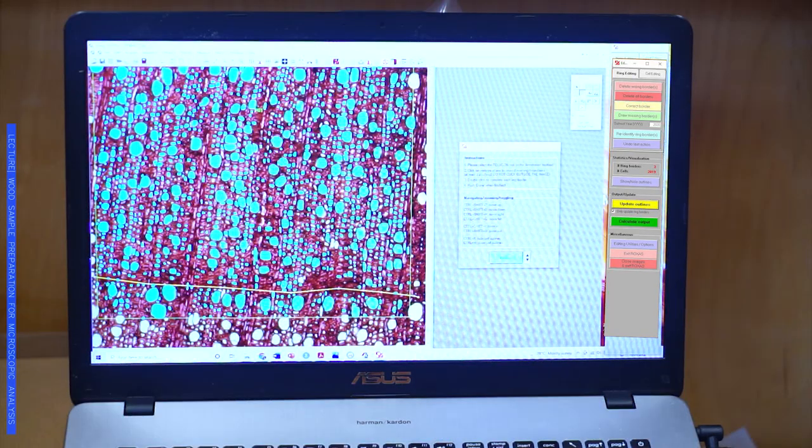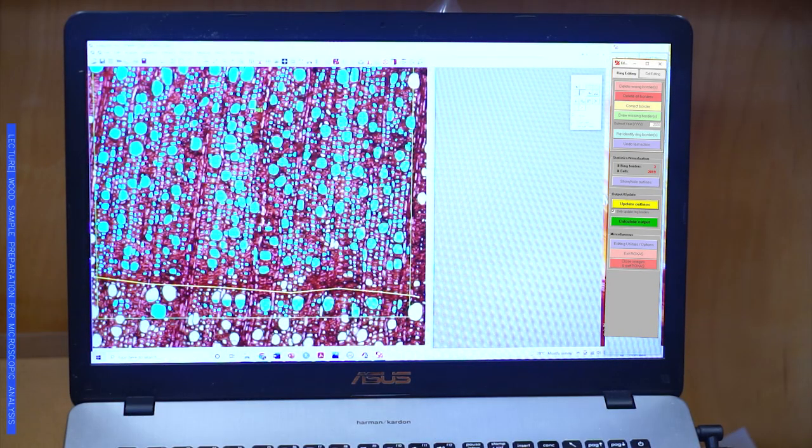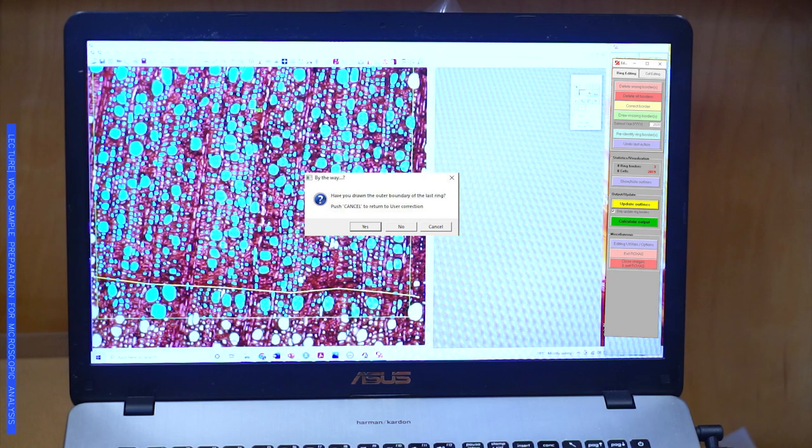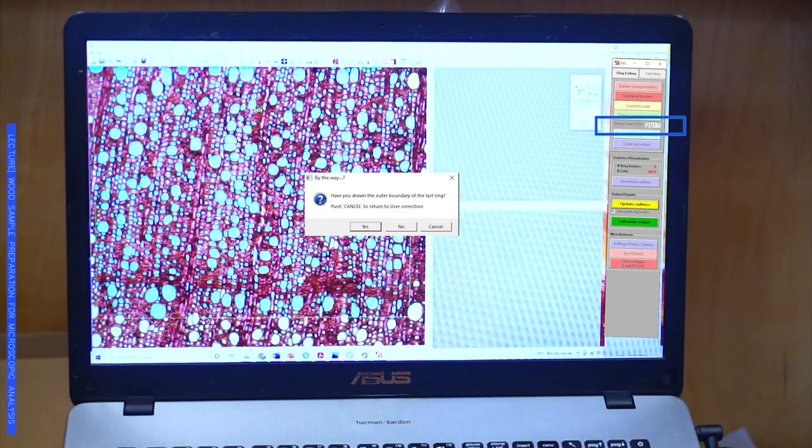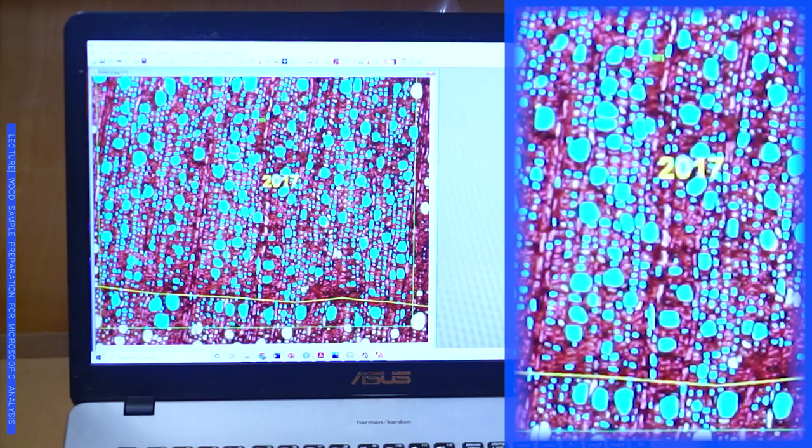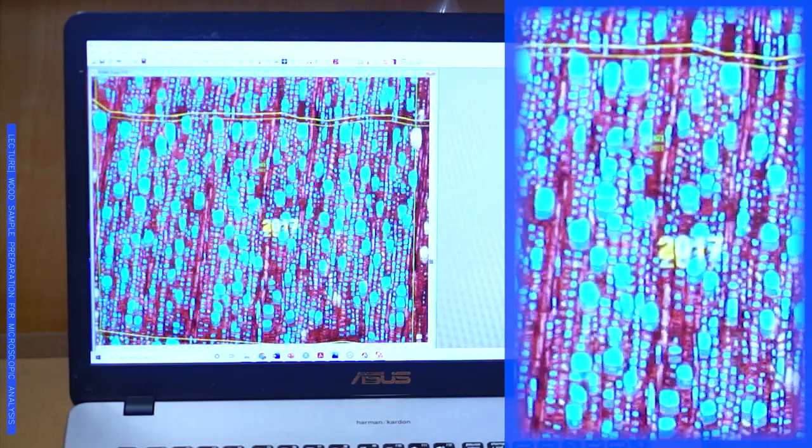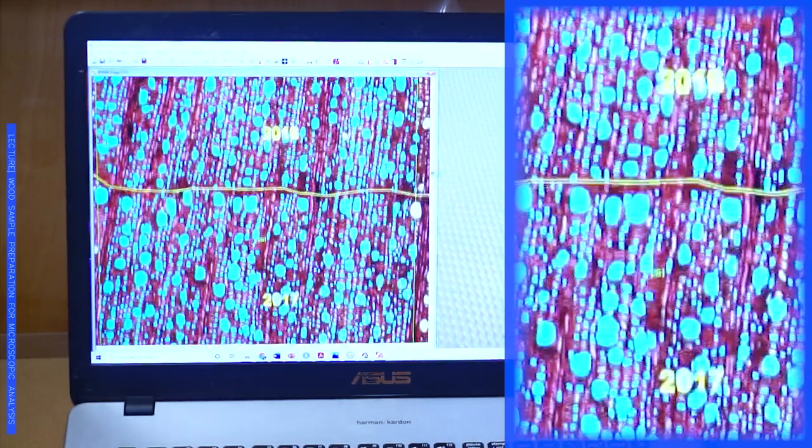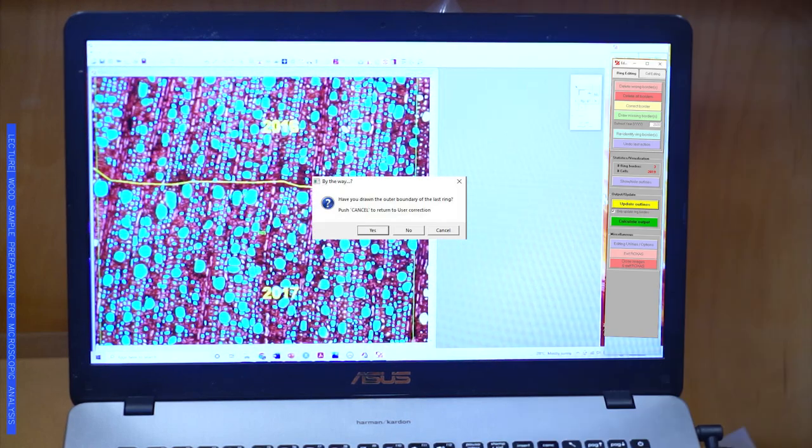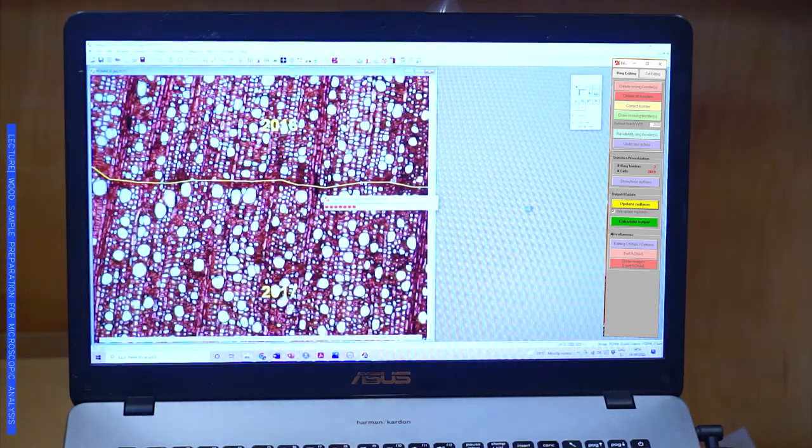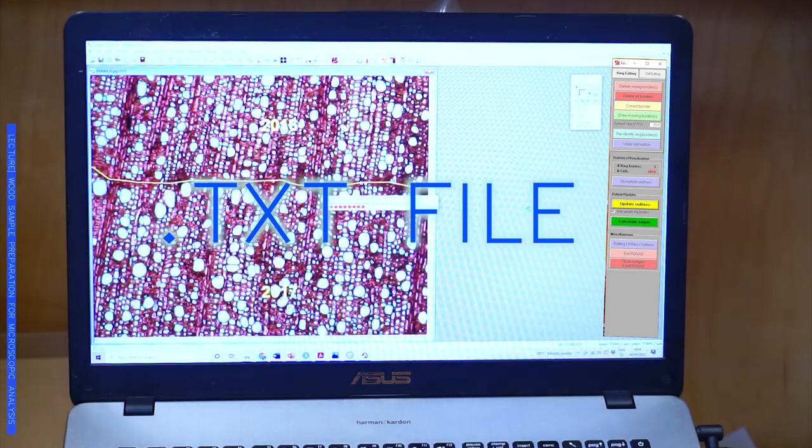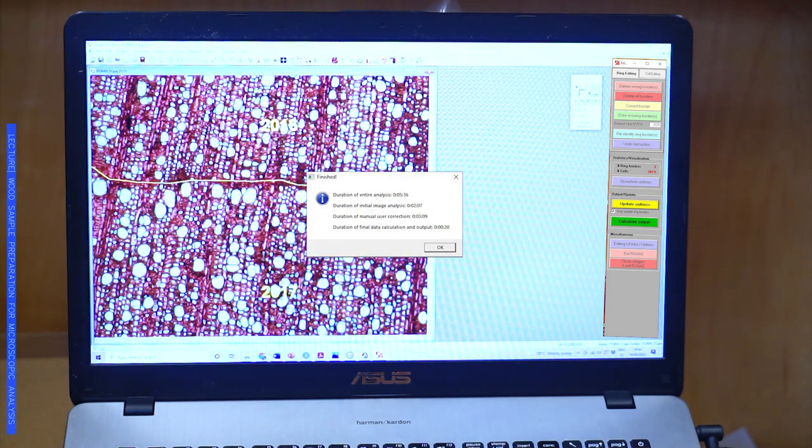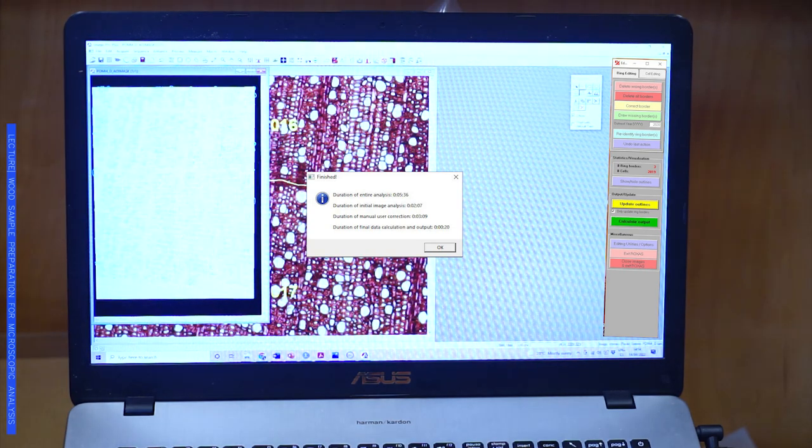In this case, we collected them in 2017, so I can just put here 2017 so that it will already give me the years. I have to update it. Here you can see already the program has assigned the year of study 2017, 16, and just one piece of the 15. After that, it's just a matter of calculating output. The program will give me a TXT file and also if you want an Excel file with all the different anatomical traits that this program is capable of measuring.